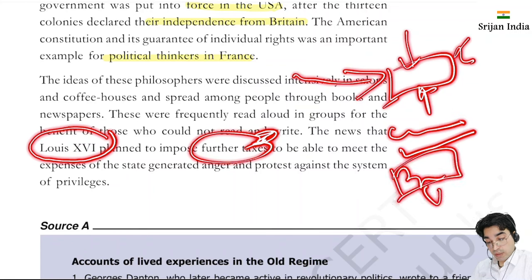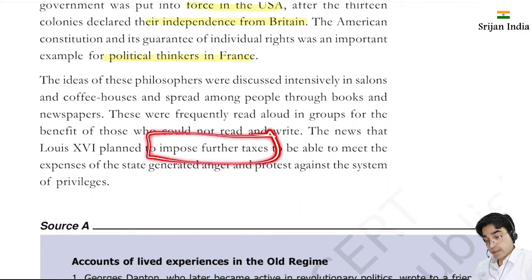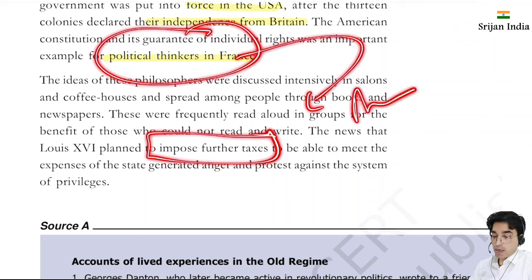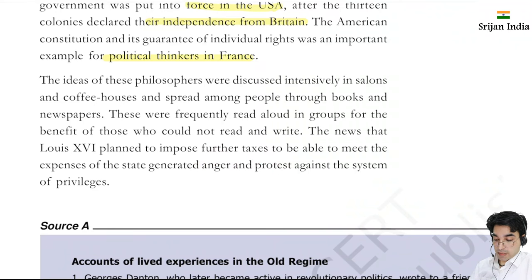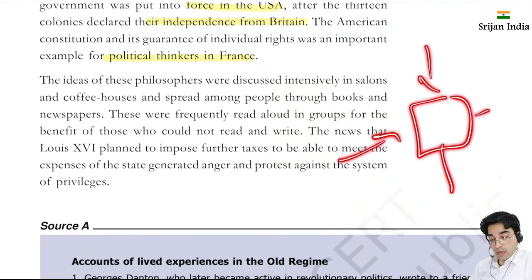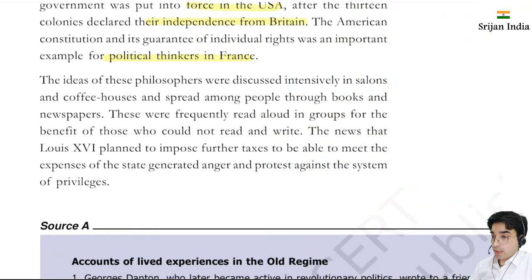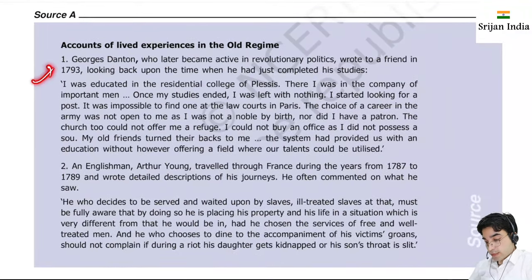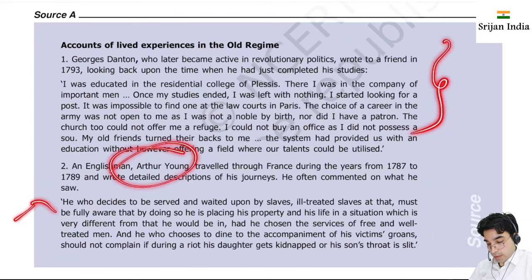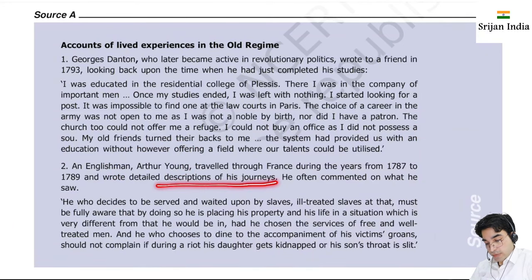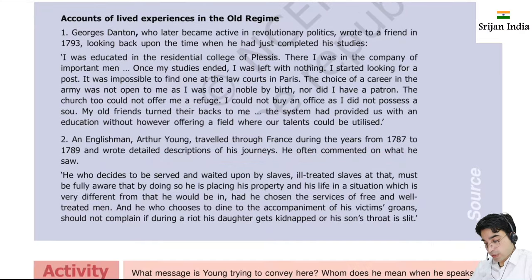He had spent everything to give freedom to the 13 American colonies, which is why he thought to levy more taxes. The thinkers felt this was an atrocity. This generated anger and protest against the system of privileges, and a common consensus began forming that certain things need to change. There is a source here - accounts of lived experiences in the old regime. The Englishman Arthur Young wrote a description of his journey through France and commented on what he saw.